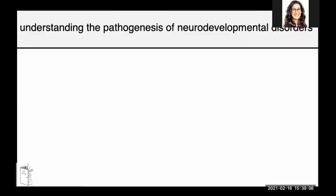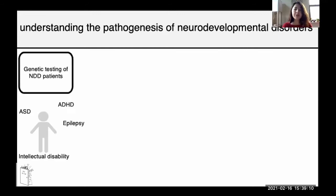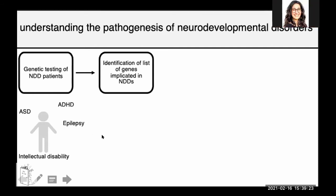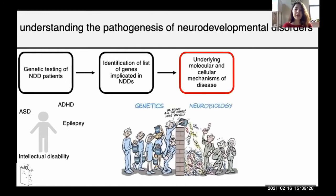With advances in sequencing technologies, genetic testing, and clinical studies, these large-scale genomic projects have become widespread and are generating a list of genes implicated in neurodevelopmental disorders such as ADHD, epilepsy, autism spectrum disorder, and intellectual disability.